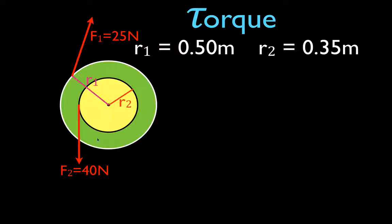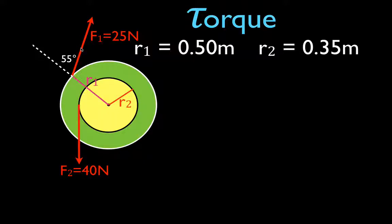There are two forces applied. The first force is applied at the edge of wheel number one with a magnitude of 25 newtons. It is applied such that the force vector makes an angle of 55 degrees with the radial vector — that is, the angle between the force vector and the radial line is 55 degrees.